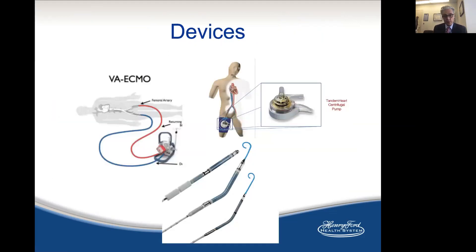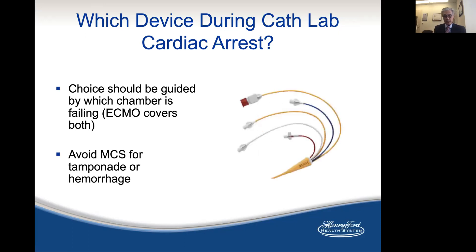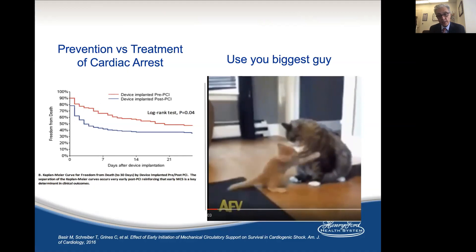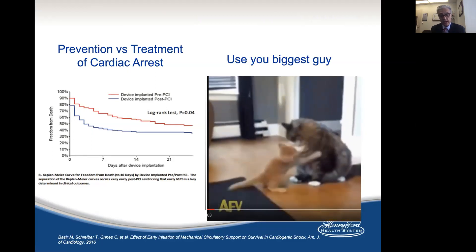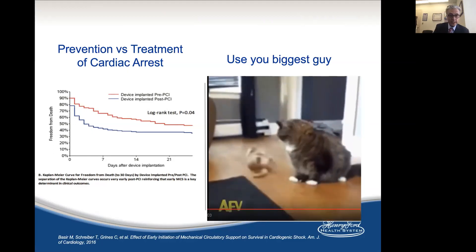Other devices are available — you can pick which chamber you support: tandem heart, Impella, and most importantly, ECMO. Which device to use during cath lab cardiac arrest is determined by your diagnosis and which chamber is failing. Use waveform, EKG, x-ray, and echo. However, right heart catheterization is underutilized and you should use it as much as you can to decide what to do. Avoid mechanical support in patients with bleeding. I tend to always go big or go home — bigger is better in mechanical circulatory support for a patient with cardiac arrest — so I use the biggest device I have and institute it as early as possible.